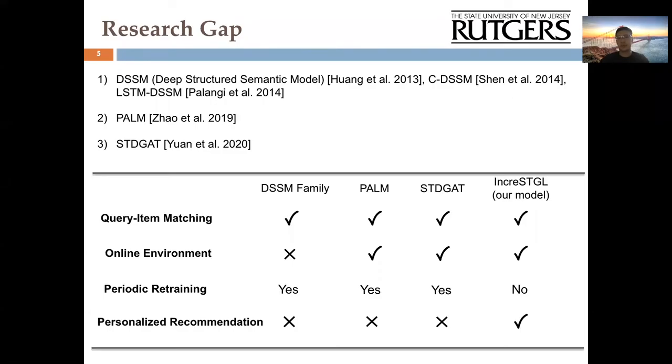Regarding the previous studies that belong to deep neural network semantic matching, the deep learning-based methods such as DSSM-based models have been introduced for search and retrieval systems. Based on DSSM, PARM further models the static geographical correlations between query and POI pair. Most recently, STGAT is proposed to incorporate user preferences and spatio-temporal information. Compared with these methods, our proposed framework IncrSTGL can literally free the online model from being retrained periodically, as well as providing high-quality personalized query-POI matching services under the online environment.